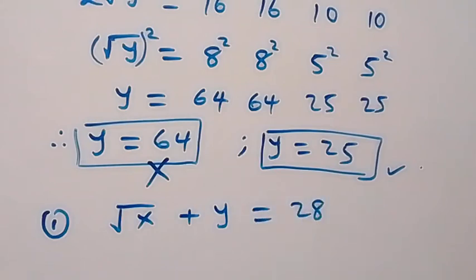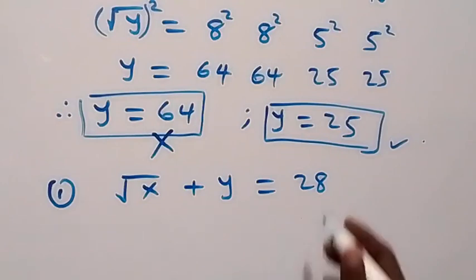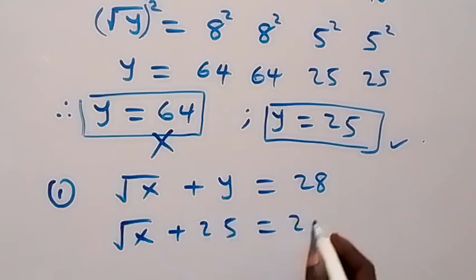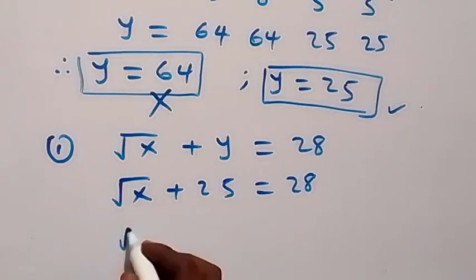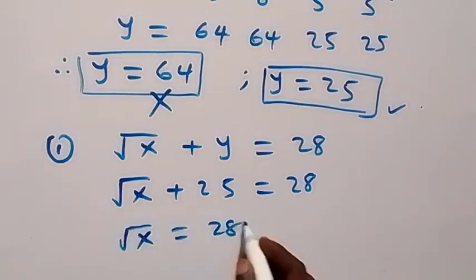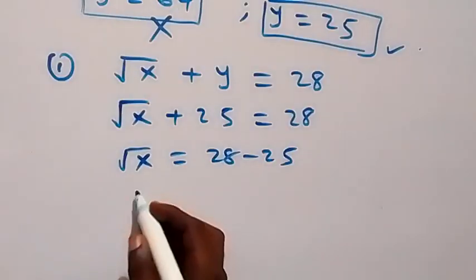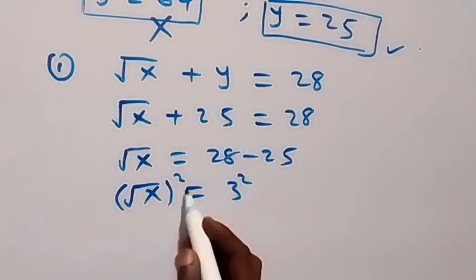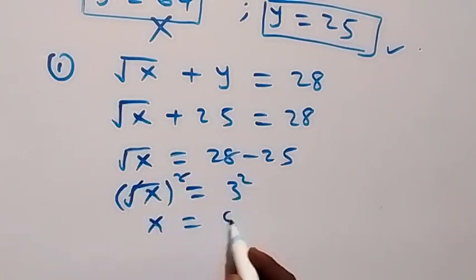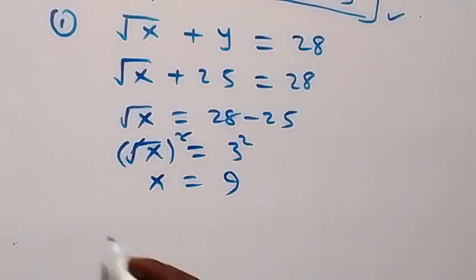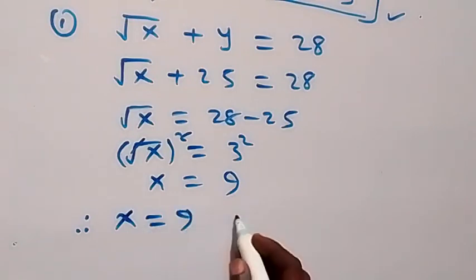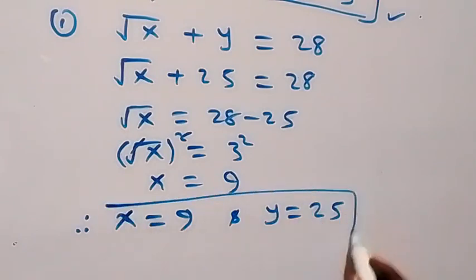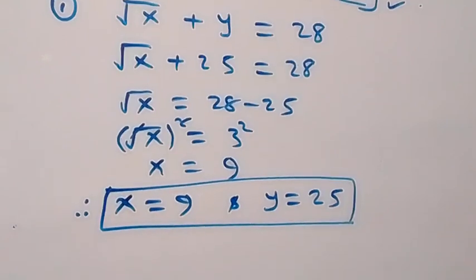Then from equation 1, which is √x + y = 28, when we substitute the value of y we have √x + 25 = 28. Taking 25 to the right-hand side: √x = 28 minus 25, which implies √x = 3. Now squaring both sides, x = 3² = 9. So therefore x = 9 and y = 25. Here we have the solution to the given problem, and we can check from what is given.